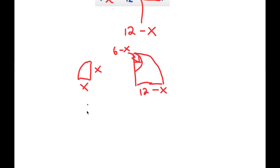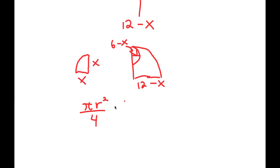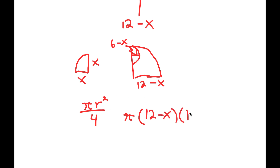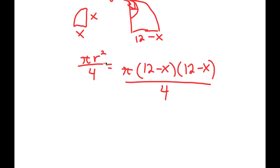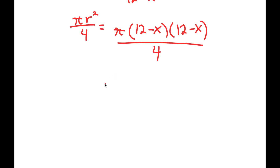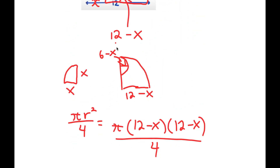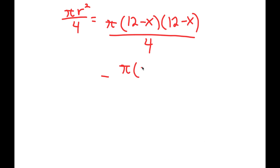The area of a quarter circle is π r² over 4. For the large quarter circle, the radius is 12 minus x, so its area is π times (12 minus x)² over 4. We subtract the area of the semicircle, which has radius 6 minus x, giving π times (6 minus x)² over 4.